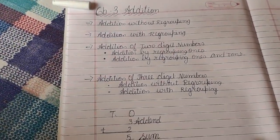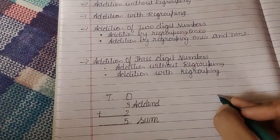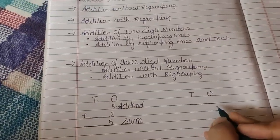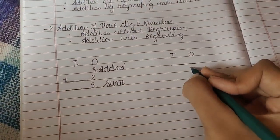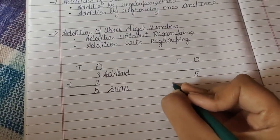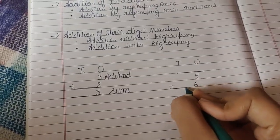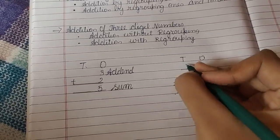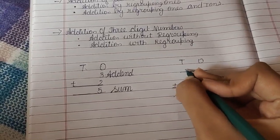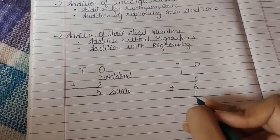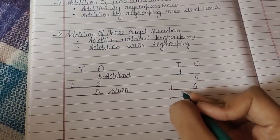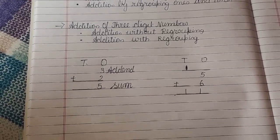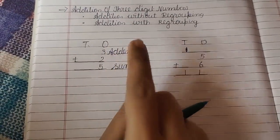Now, addition with regrouping means when there is a sum with carryover. So 5 plus 6 — the answer comes 11. We write 1 down and carry 1 upward. We write the answer 11 across both sides in this way. These are the 2 addends.